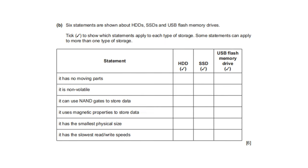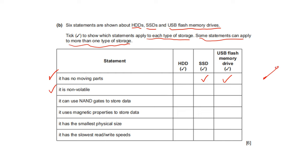Six statements are shown about HDDs, SSDs, and flash memory drives. Tick to show which statement applies to each type of storage — some statements can apply to more than one. It has no moving parts — SSD and USB flash drive have no moving parts; HDD has a read/write head so it has moving parts. It is non-volatile — all three, HDD, SSD, and USB flash, are non-volatile; they can still store data when there is no power.